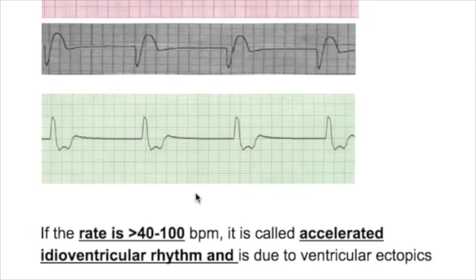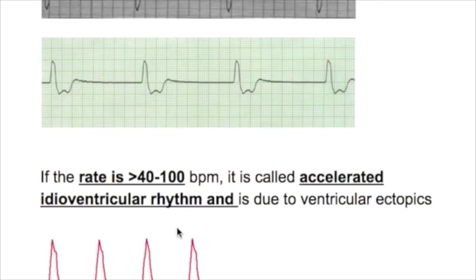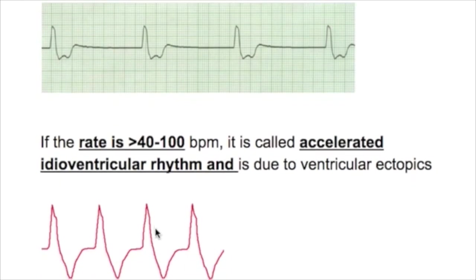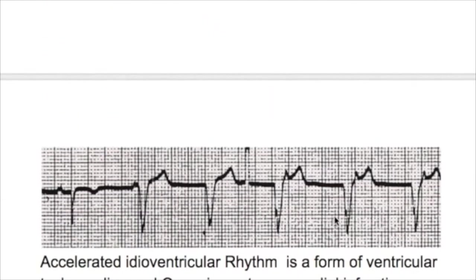Accelerated idioventricular rhythm is when the rate is between 40 to 100 beats per minute and is due to ventricular ectopics. The rate is faster than regular idioventricular rhythm. It is a form of ventricular tachycardia and occurs in acute MI and digitalis toxicity.